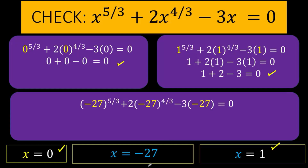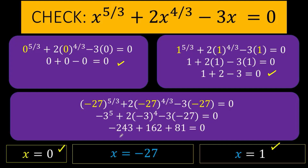Now let's check x equals negative 27. Replacing x with negative 27: negative 27 raised to 5 thirds equals negative 3 raised to the 5th. Negative 27 raised to 4 thirds simplifies as negative 3 raised to the 4th, times 2, plus all the rest. Negative 3 raised to the 5th is negative 243. 2 times negative 3 raised to the 4th equals 162. Negative 3 times negative 27 is 81. So 162 plus 81 is 243, and negative 243 plus 243 equals 0. Therefore, x equals negative 27 is also a valid solution.